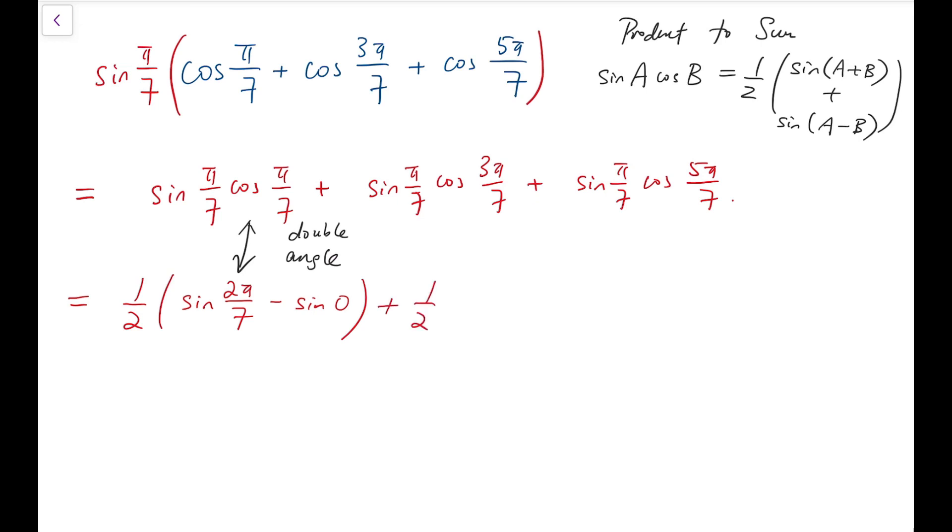As for the second term, we'll have again a half multiplied by sine of 4π over 7 added by sine of minus 2π over 7. So after that, we'll become a subtract by sine of 2π over 7. And for the third term, we'll be added by a half multiplied by sine of 6π over 7 plus sine of negative 4π over 7.